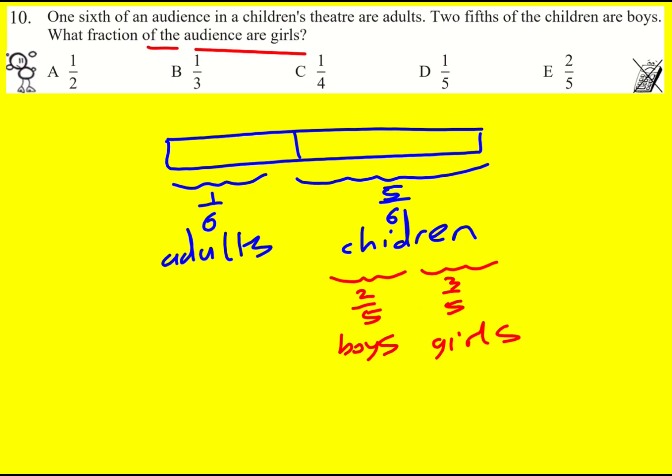So what fraction of the audience are girls is going to be three-fifths of five-sixths, which is the same as doing three-fifths times five-sixths.